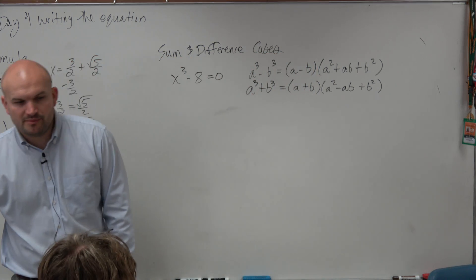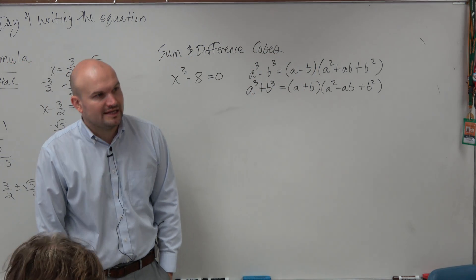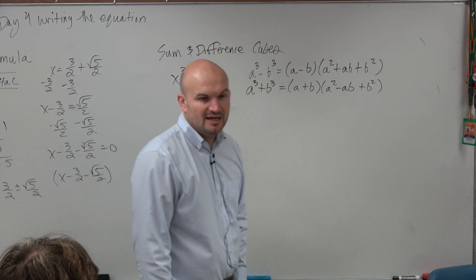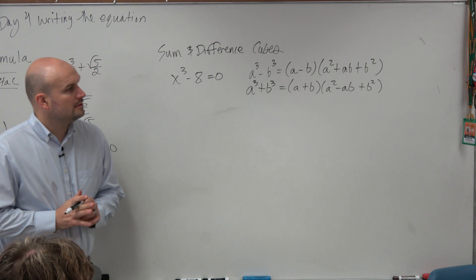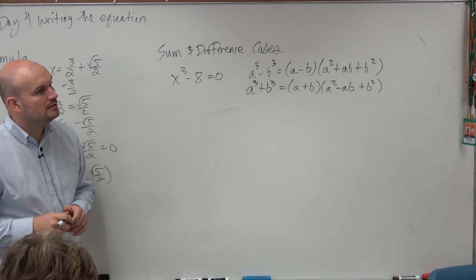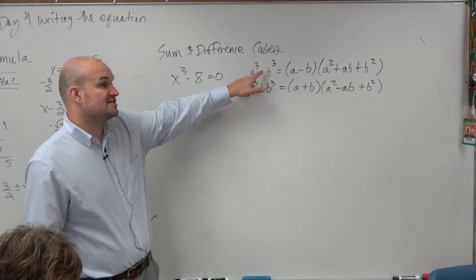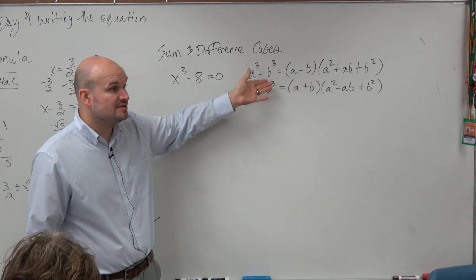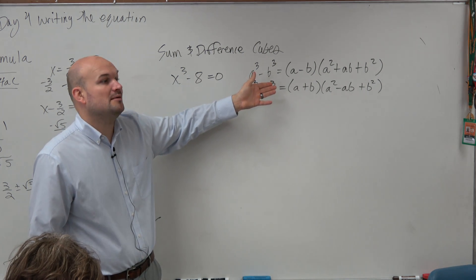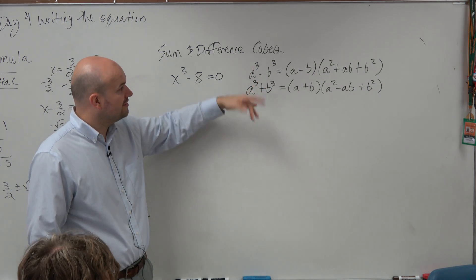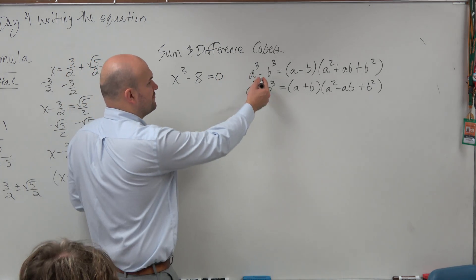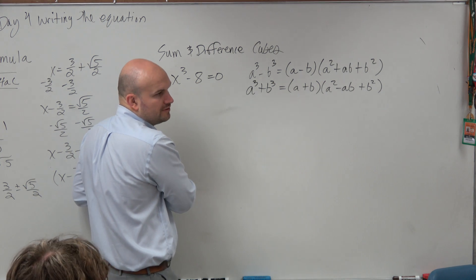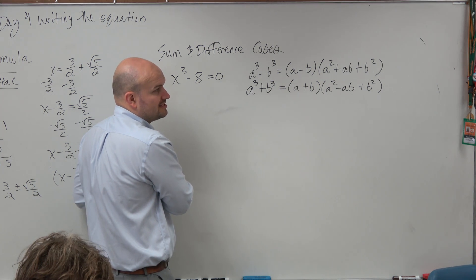For the sum, a cubed plus b cubed is a plus b times a squared minus ab plus b squared. They're just general formulas. We're not going to use them a whole bunch, but they should be something that you have in your back pocket. Remember how we have the difference of two squares? But there's no such thing as the sum of two squares because you can't factor it out. For cubes, you can take the difference and the sum. I'm just providing it for you because I'm going to do one example and that's it.